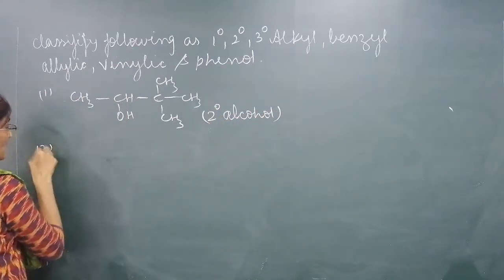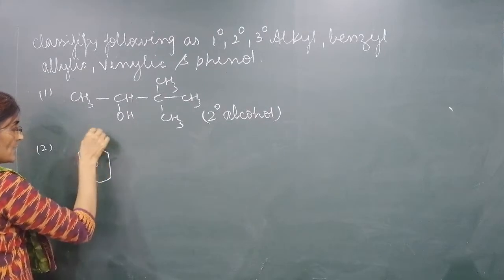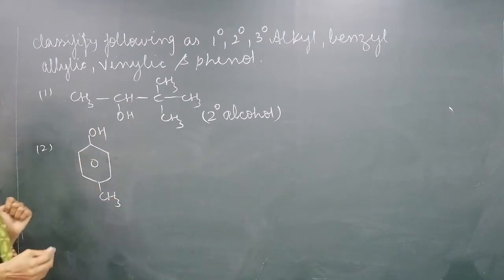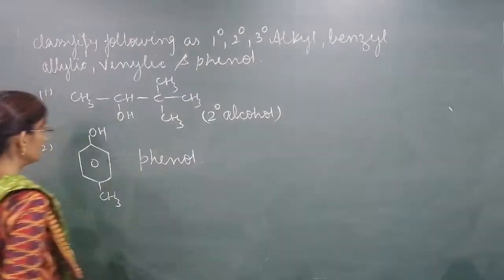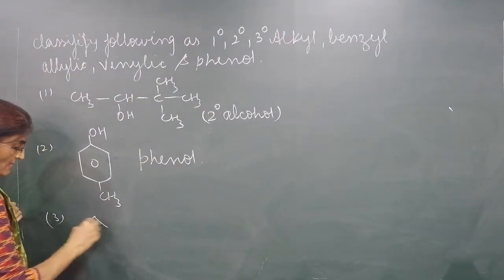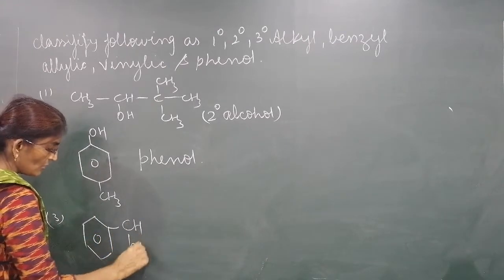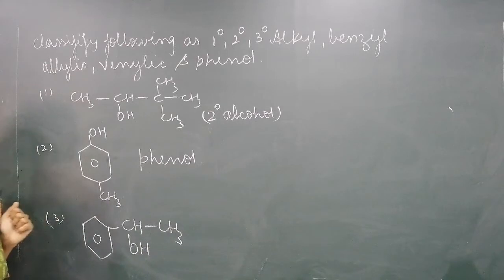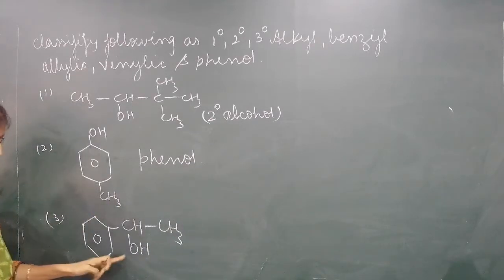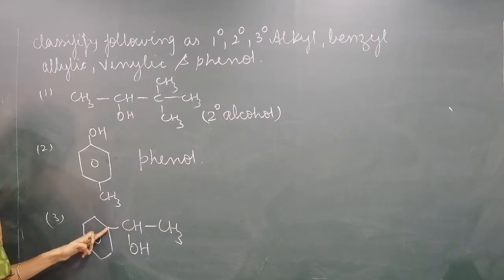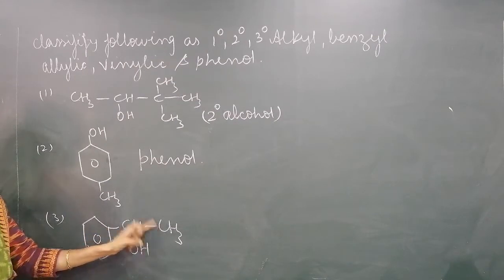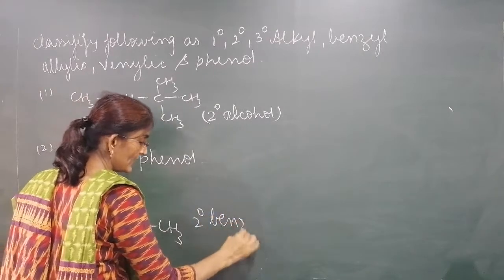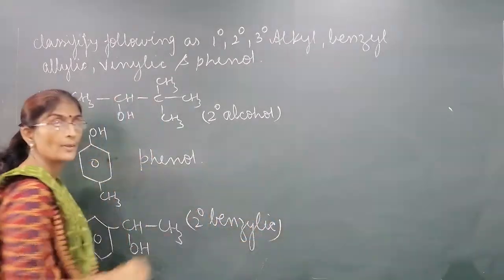Second example: suppose we have a benzene ring with OH and a methyl group. The OH-containing carbon is attached to the carbon of the benzene ring — hence it is called Phenol. Third example: we have a benzene ring with CH(OH)-CH3. The OH-containing carbon is attached to the carbon of the benzene ring, so it is Benzylic. Since it is attached to two other carbons — one ring carbon and one methyl — it is 2-degree Benzylic alcohol.